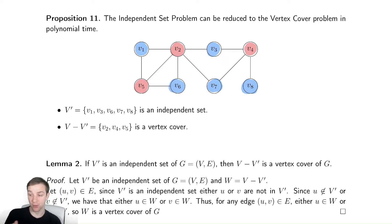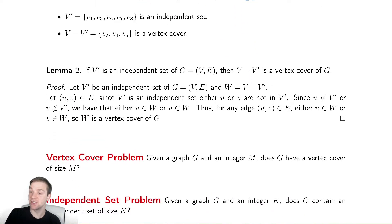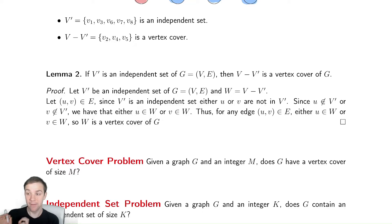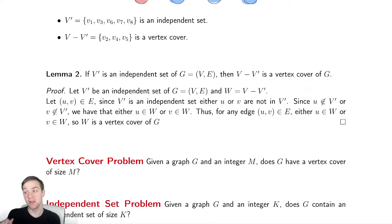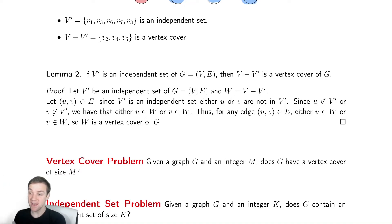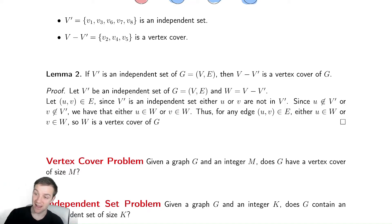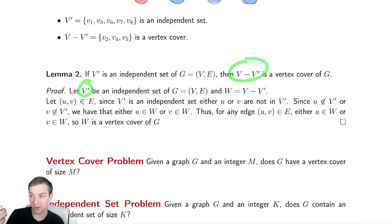Just like we saw before, we can prove this as an if and only if. I'll prove one way and leave the other way to you. So I'm going to say: if we have an independent set, then V minus that independent set is a vertex cover. Let's prove it. Our independent set is V prime. We're going to define W as V minus V prime.